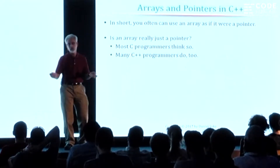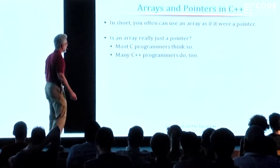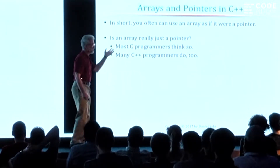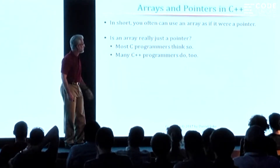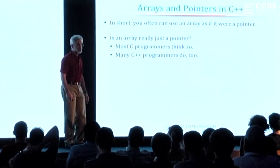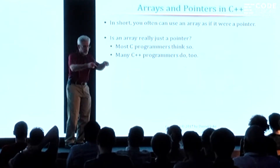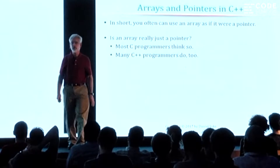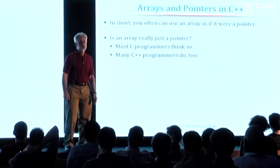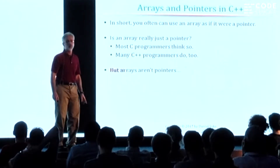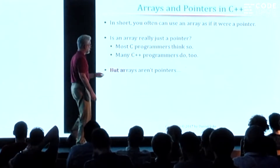And so it raises the question: is an array really just a pointer? What is its true implementation? I have found over many, many years of teaching this, that when I poll C and C++ programmers and say 'what's the real type when you declare int X square bracket something, what's its type?' — an awful lot of people say it's a pointer. And that's not true. It turns out that arrays aren't pointers.